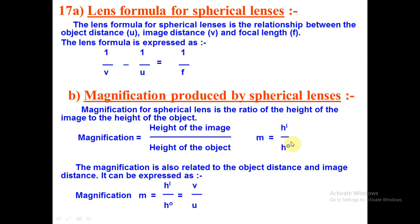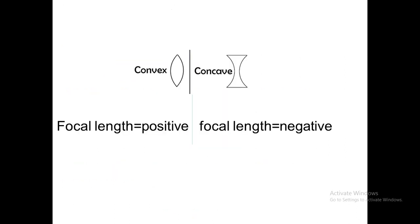So remember - for both lens and mirror, m = hi/ho is common. But in mirror formula it becomes −v/u, while for the lens it remains +v/u. Just keep in mind this one sign difference. For mirrors it is minus, for lenses it is plus. This is very important - read the textbook theory paragraph 5 line by line, and I have noted down all the important conclusions here.